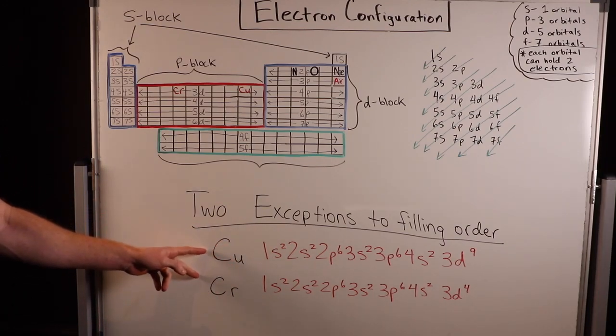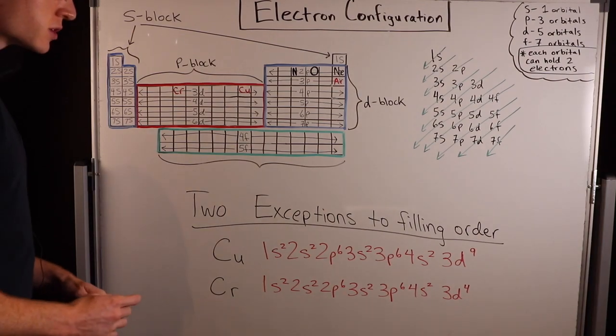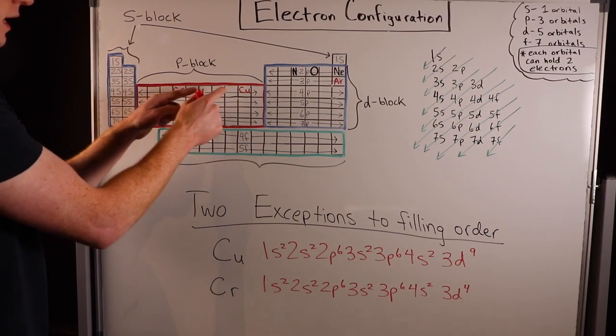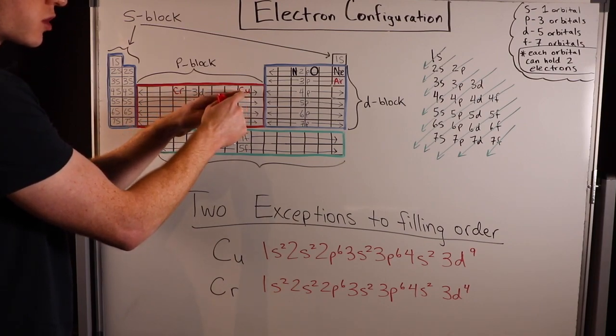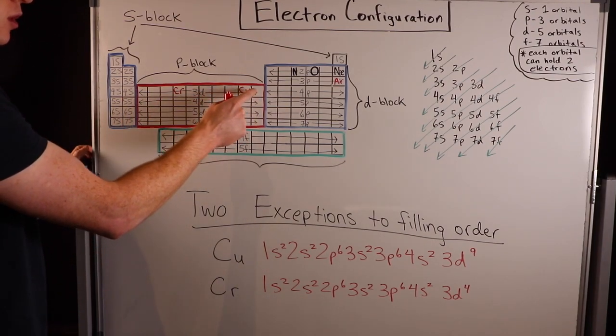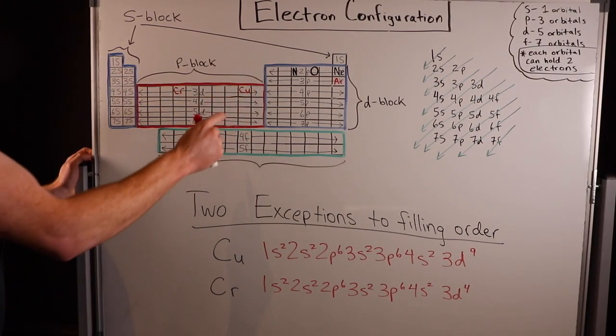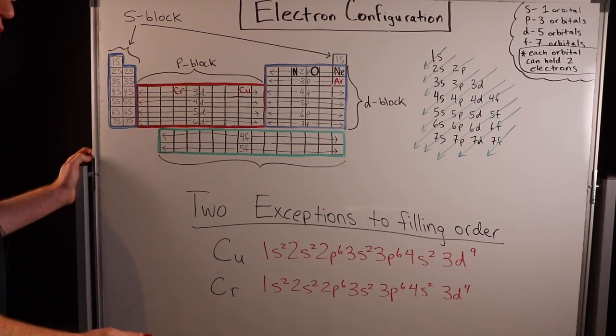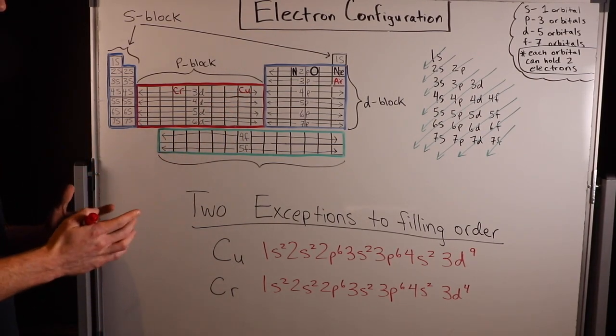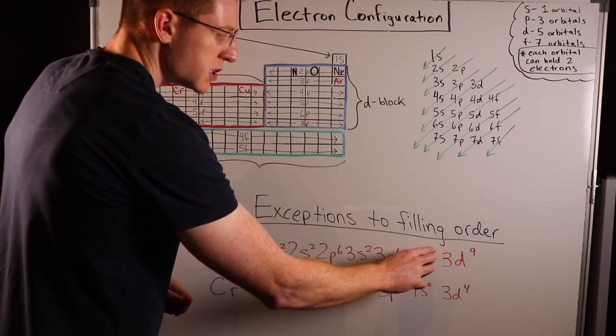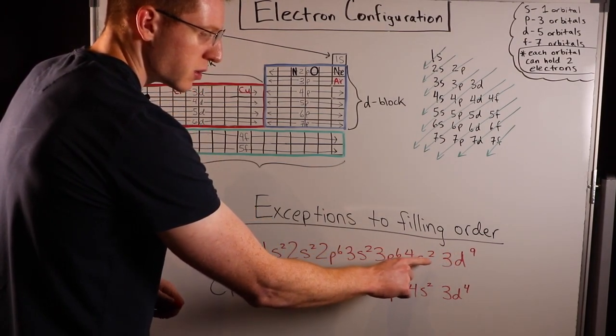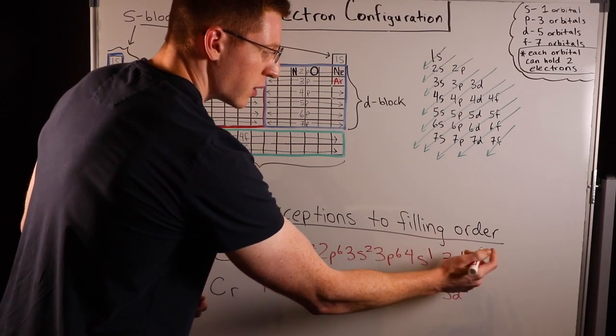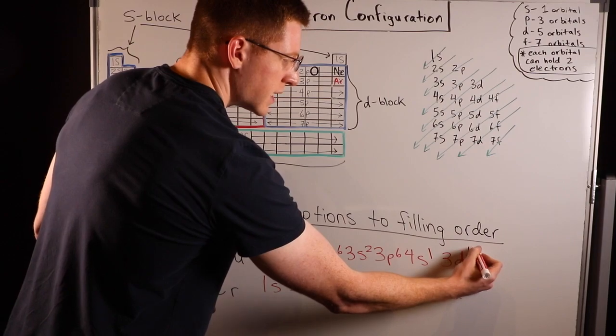These are exceptions. This is what you would think copper and chromium would be. But actually, look at where they are. Copper is one electron away from having a full 3d orbital. If it just had one more electron, it would have a full 3d orbital. That is so much more stable that what it does is it actually steals an electron from this 4s2, making it a 4s1, and uses it to fill the d orbital, making it 3d10.